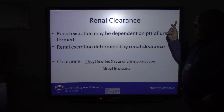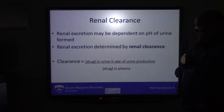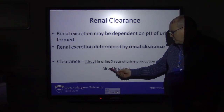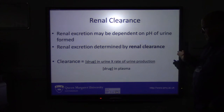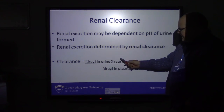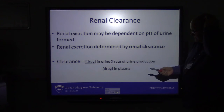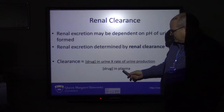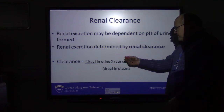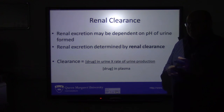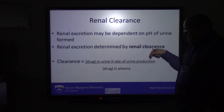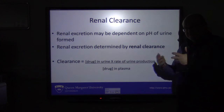Renal clearance for compounds excreted in the urine is calculated by looking at the concentration of drug in the urine multiplied by the rate of urine production, divided by the concentration of drug in the plasma. If there's more drug in the plasma, the ratio will be low, meaning low clearance. As the drug moves from plasma through the kidneys, the plasma concentration falls and clearance rate rises. If there's a malfunction in the kidney affecting urine production, clearance will also be low and the drug has the potential to build up.